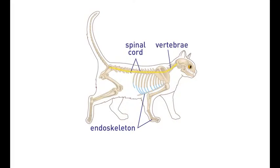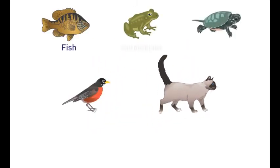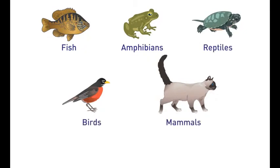Vertebrates have a spinal cord encased by protective vertebrae. They also have an endoskeleton that is composed of cartilage or bone. Fish, amphibians, reptiles, birds, and mammals are all vertebrates.